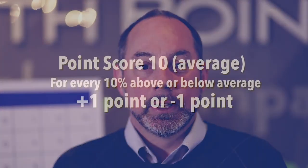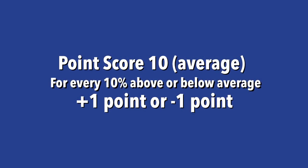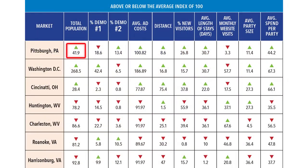Once we have these indexes, we're able to translate them into a point value for the purposes of scoring each of the markets. Starting with a point score of 10 for being average, for every 10 percentage points above or below average, you will either gain a point or lose a point. So for example, Pittsburgh is 41.9% larger than the average population of the market set, so they'll get four extra points in this data field, whereas Charleston is just 13% the size of the average score, so they're going to lose eight points.